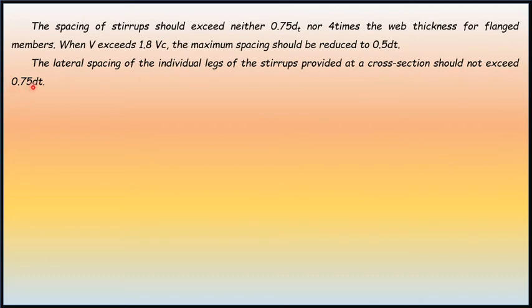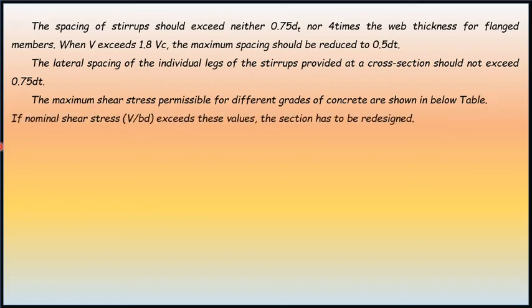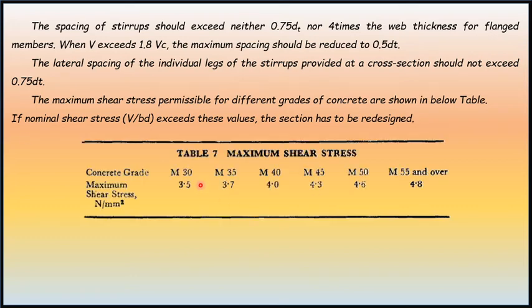The maximum shear stress permissible for different grades of concrete are shown in the below table. If nominal shear stress V/bd exceeds these values, the section has to be redesigned. This is Table 7 from IS 1343: concrete grade and maximum shear stress in N/mm², starting from M30 to M55 and over M55 grade. Maximum is 3.5. This type of maximum shear stress we have also seen in IS 456, Design of Plain and Reinforced Concrete Structures.